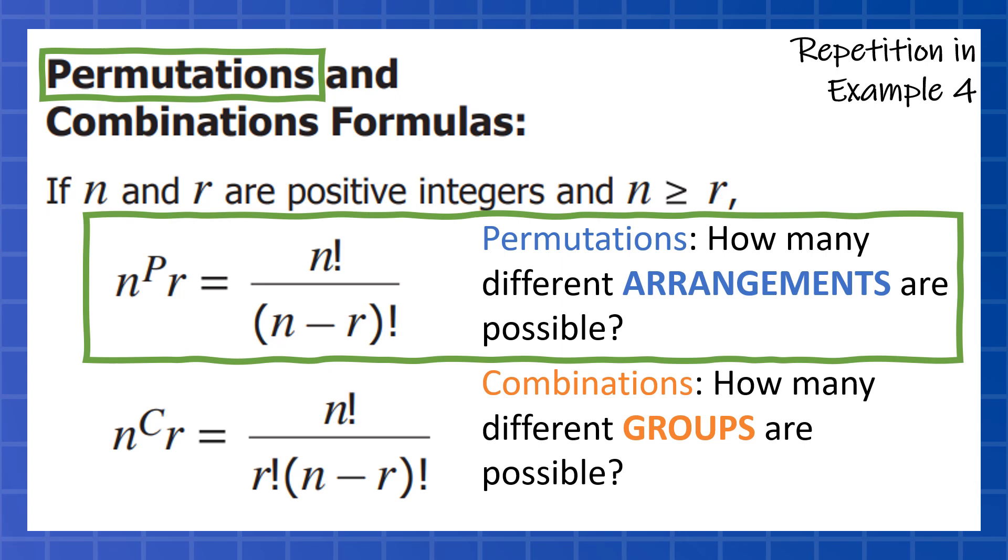The other way that people remember this, they say that permutations are places when the order matters. We're going to see a couple examples and we're going to talk through how we can tell the difference between the two. But this video, we're going to focus on permutations and how we get the answers. We're also going to look at some repetition in example four and what we do in those particular situations.